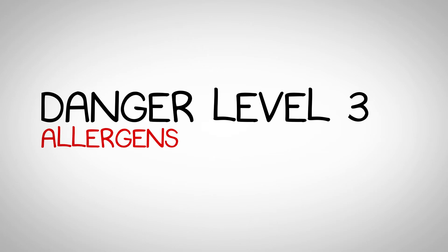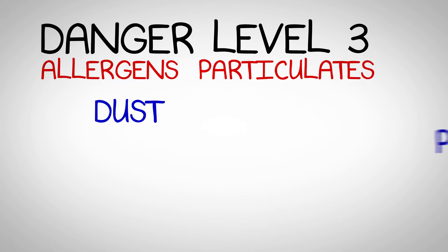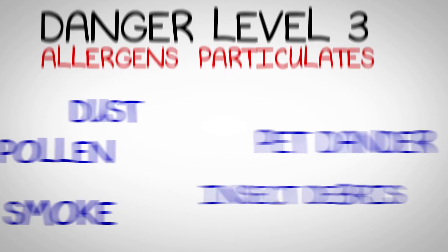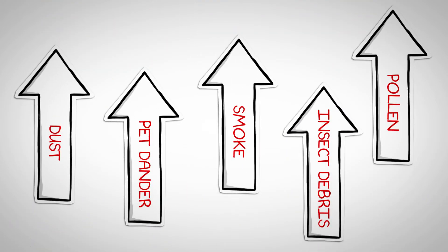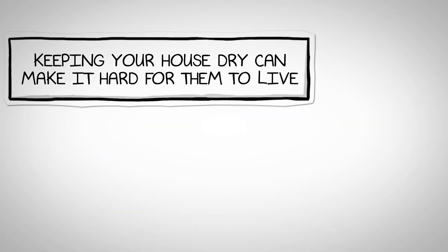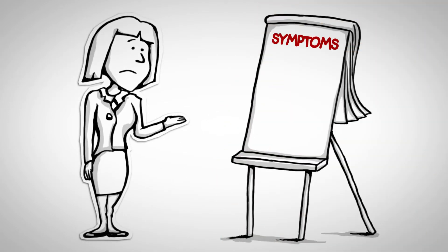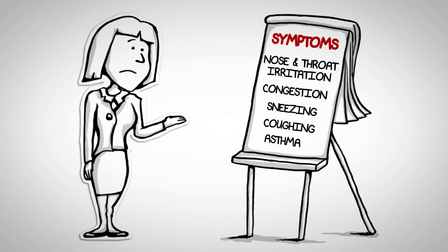Danger level three are allergens and particulates. Dust, pet dander, pollen, insect debris, and smoke are microscopic organisms that may live and float around naturally in your home. They typically travel through your air ducts and upward through the home following the stack effect. Keeping your house dry can make it hard for dust mites to live. Filtering and cleaning your indoor air is very important if these allergens and particulates are present in abundance. Symptoms could be nose and throat irritation, congestion, sneezing, coughing, and asthma flare-ups.